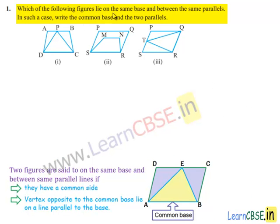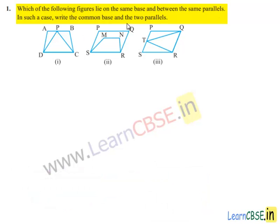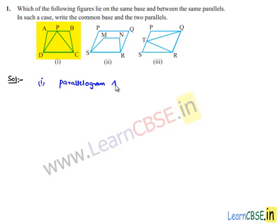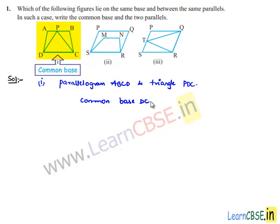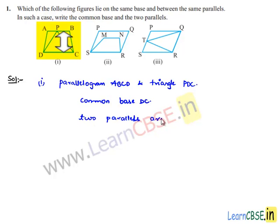Moving on to the first question: which of the following figures lie on the same base and between the same parallels? In such a case, write the common base and the two parallels. Consider the first bit — we have two figures: parallelogram ABCD and triangle PDC. These both lie on the common base DC and between two parallels AB and CD.